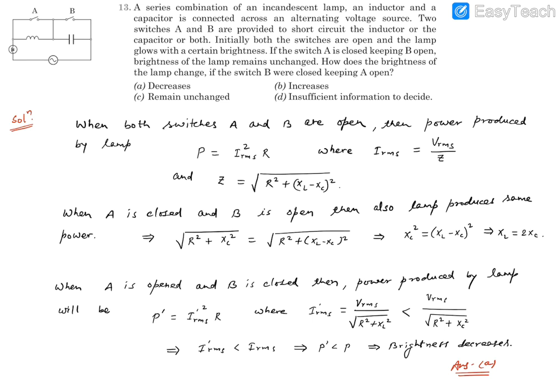Earlier we used R squared plus XC squared. That time IRMS used to be VRMS divided by square root of R squared plus XC squared. And we have decided that XL is double of XC. That means XL is more than XC. So since this number is more, the overall number will be lesser. That means the current running in this case is going to be less than the current which was running in the second case.